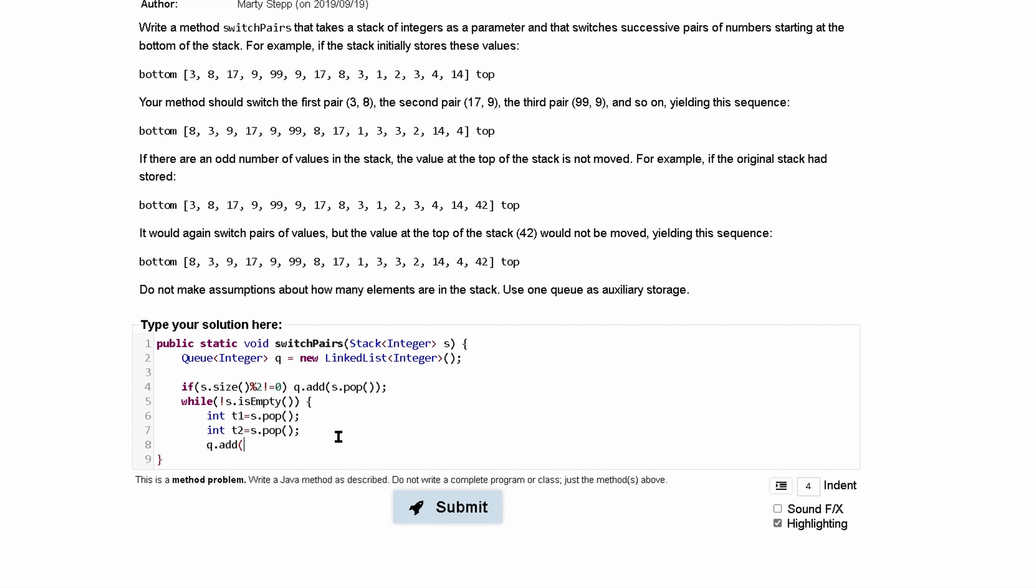So we're going to do a q.add, where we add our t2. And we're going to q.add, where we add our t1. So we're just swapping the two like this. And we're going to do this repeatedly.